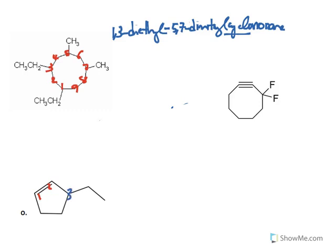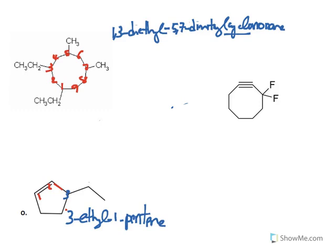We name the substitution first. The carbon in question is bonded to carbon on three sides and one hydrogen, making it an ethyl substitution — an ethyl branch on carbon number three. So the name is 3-ethyl-1-cyclopentene. It is a cyclic alkene, so we use the prefix 'cyclo'.